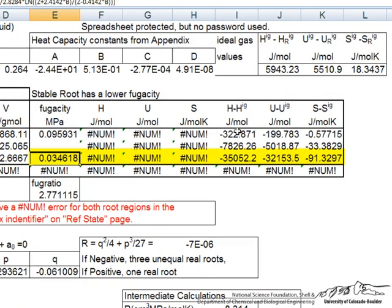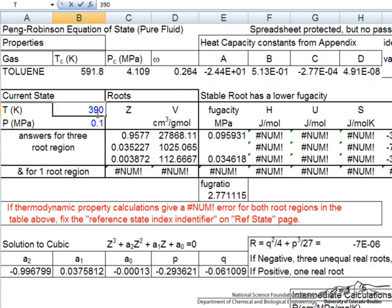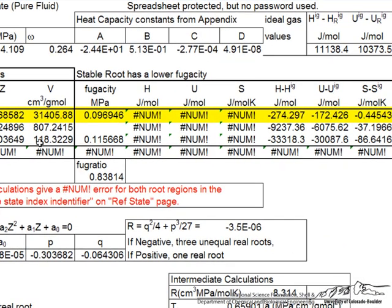Now let's go to 390K, which should put us in the vapor phase. Here again we have the fugacities, and now the fugacity is lower for the vapor phase. The spreadsheet gives the differences between the ideal gas values and the values at the conditions we're at for h, u, and s — and of course also for fugacity.